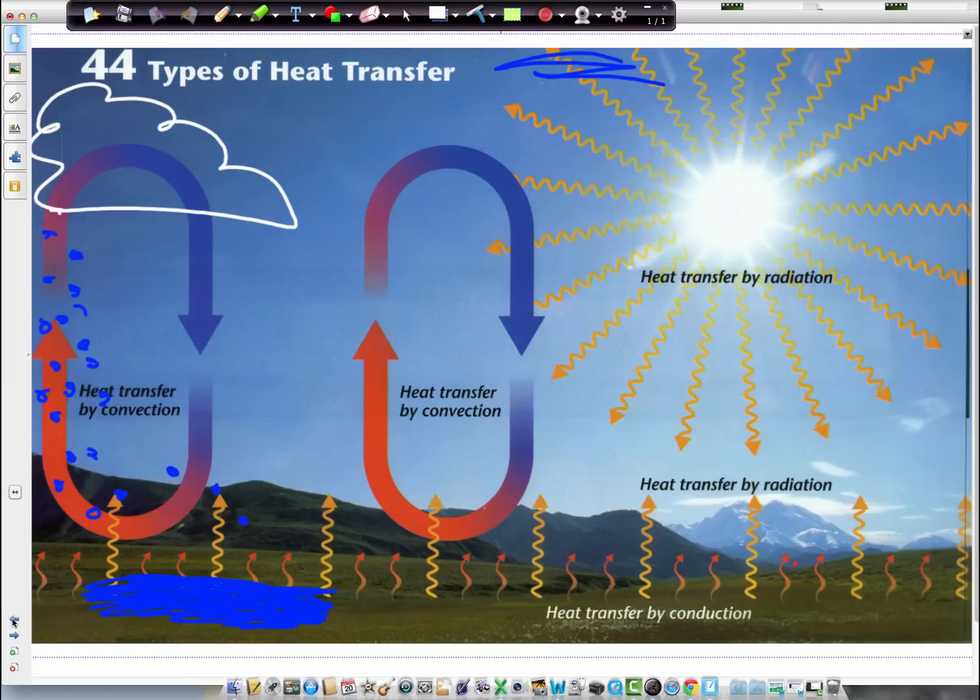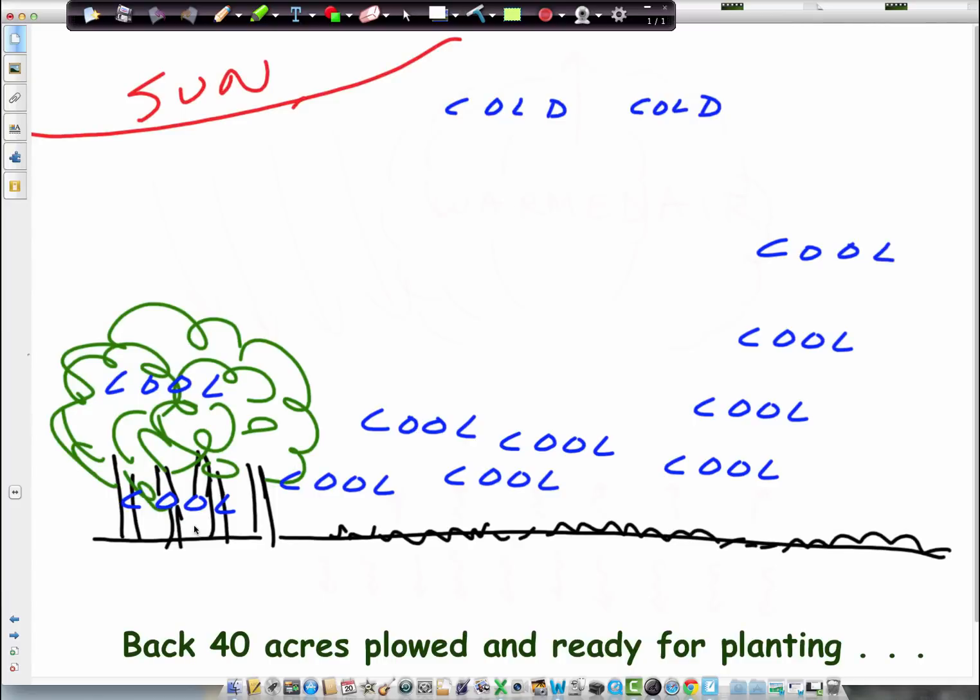But convection also involves the cool air coming down and then moving sideways, moving horizontally along the ground as the warm air rises from the ground into the atmosphere, where the heat dissipates and all that air becomes cool again and sinks back down to the earth. This whole process goes over and over again.